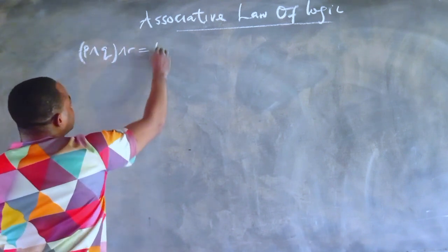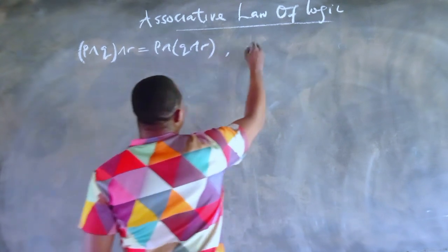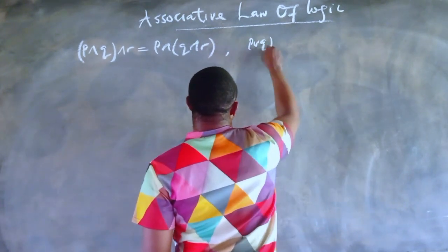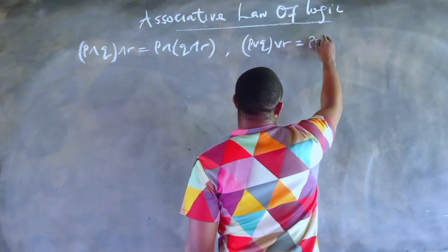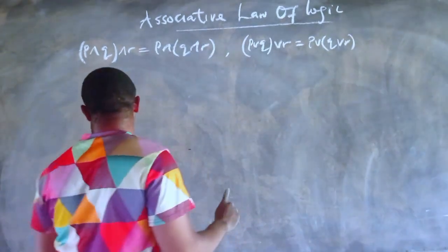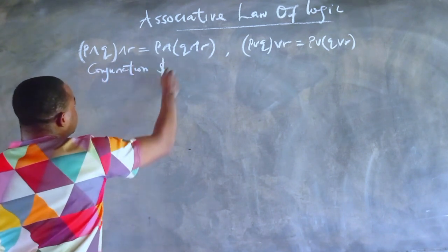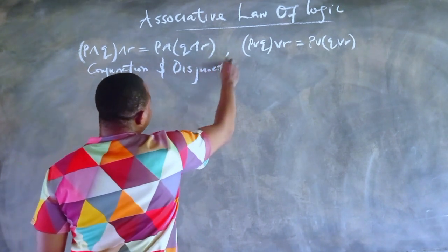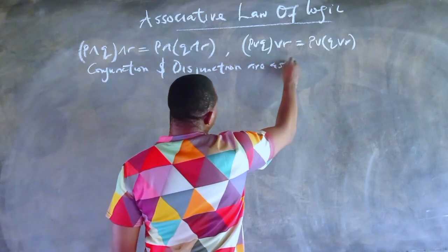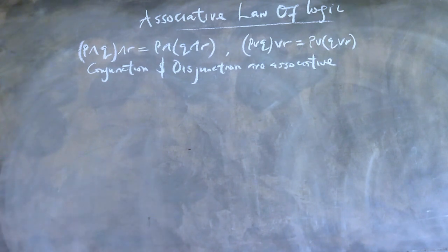It comprises two major parts. The first part states that (P and Q) and R is equal to P and (Q and R). The second part is (P or Q) or R is equal to P or (Q or R). Simply put, conjunction and disjunction are associative, just like addition and multiplication are associative in algebra.